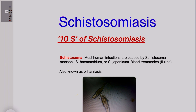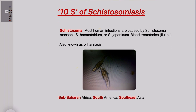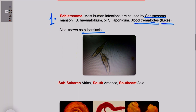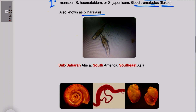The first S is for Schistosoma — this infection is caused by the parasite Schistosoma. Human infections are caused by Schistosoma mansoni, Schistosoma haematobium, or Schistosoma japonicum. These are blood trematodes, or blood flukes. This infection is also known as bilharziasis.